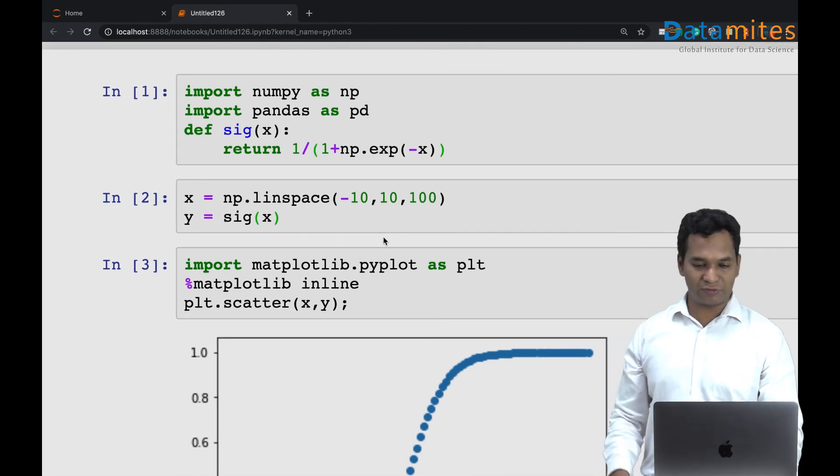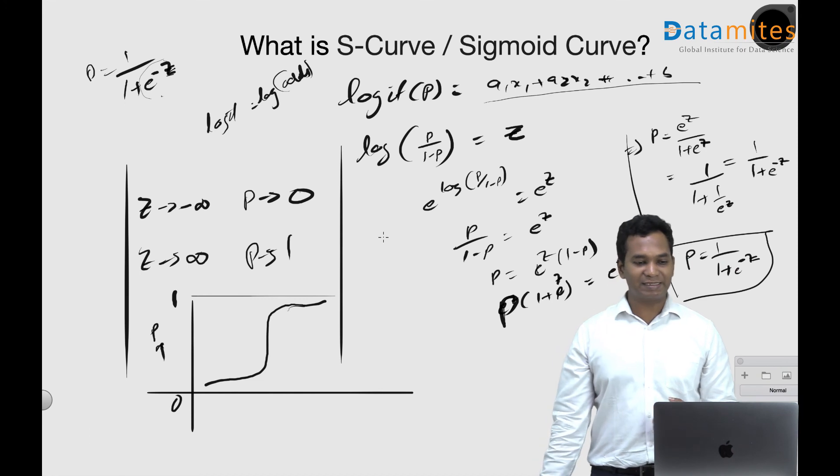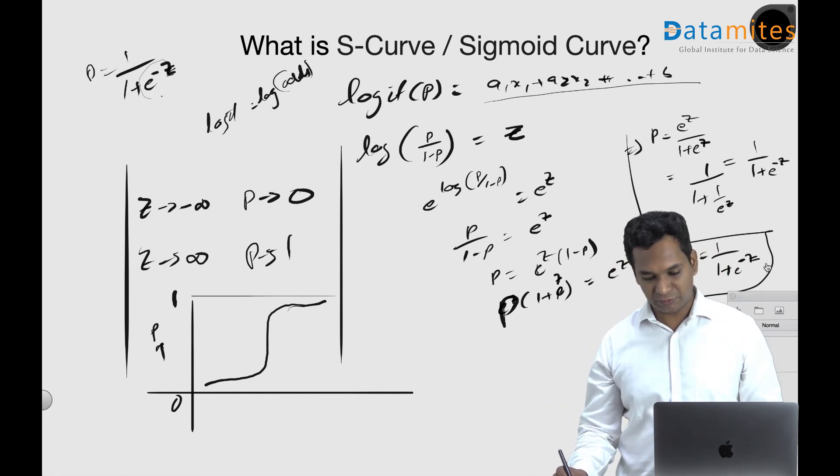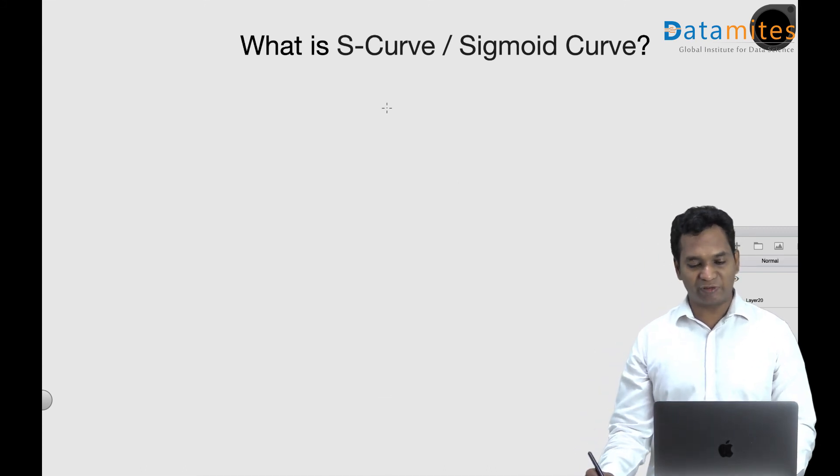Where do you use it? Sigmoid function is actually at the heart of your logistic regression. If you look at the logistic regression, the heart of logistic regression is the sigmoid function.